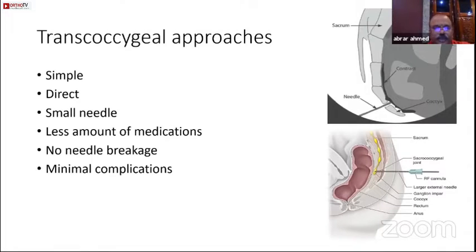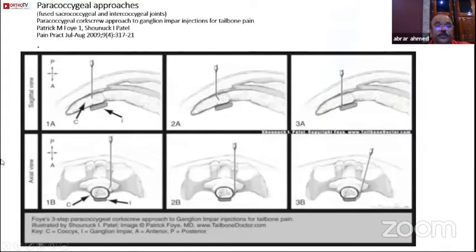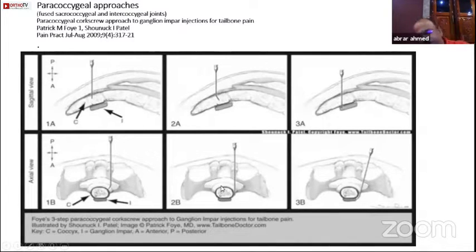All these approaches were later modified, and trans-coccygeal approaches were used — they were simple, direct approaches requiring a small needle with minimal medication. There is no needle breakage and minimal complications. If there is a disc between the sacrococcygeal junction and C1, C2, C3 and you cannot go through trans-coccygeal, you modify to the paracoccygeal approach, in which you use a bent needle, slide it around the bone, tilt it slightly medially, and inject the material there.